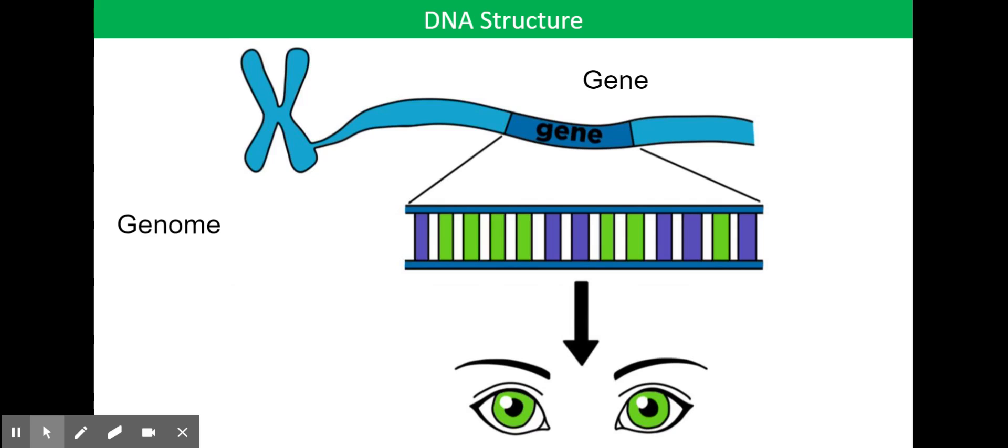So if you have a particular sequence of A, T, C and G, you might end up with green eyes, or if yours is slightly different, you might end up with blue eyes. And we've already mentioned that term genome that's also on the slide. That is all the genetic material in every single cell, at every single nucleus in your body.